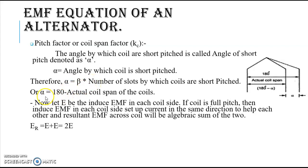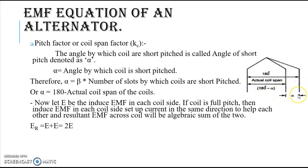Alternatively, alpha equals 180 degrees electrical minus the actual coil span of the coil. So subtracting the actual coil span from 180 degrees gives the value of alpha. These are the two methods to find the angle of short pitch.